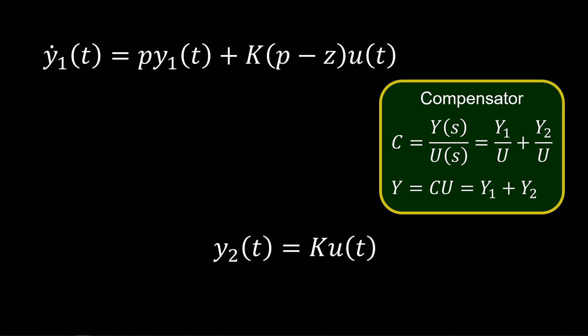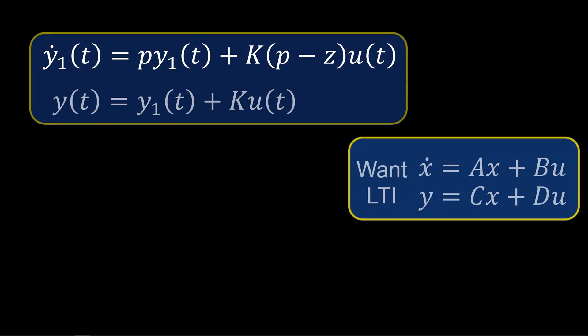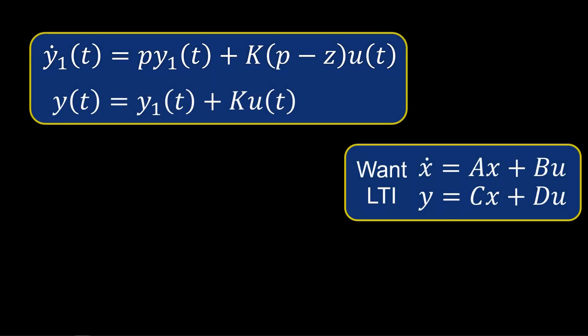Now, the compensator output, Y, is the sum of Y1 and Y2, given input U. We write this in the time domain, and then substitute Y2 for K times U, to get the system into the desired LTI form.